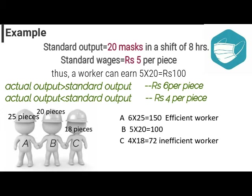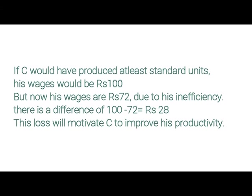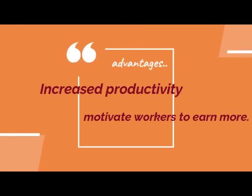Now you can see how efficient workers will get more compensation for their hard work. This will motivate the lazy workers to produce at least standard units and prevent themselves from suffering a loss. In this case, if C would have produced at least the standard 20 masks, then his wages would have been equal to B's — Rs 100. This difference of Rs 28 is enough to motivate a daily wage earner. By using this technique, production can be increased many times in factories and efficient workers can earn more.